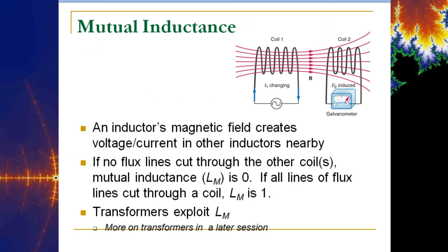Something we'll explore further in the transformers discussion is mutual inductance. On one side we have a powered coil of wire generating an electromagnetic field. If you put another coil close by, it will induce a voltage on that other side — the magnetic field generates a current through those coils that can be detected, as measured by an analog galvanometer. That's the principle on which transformers work.